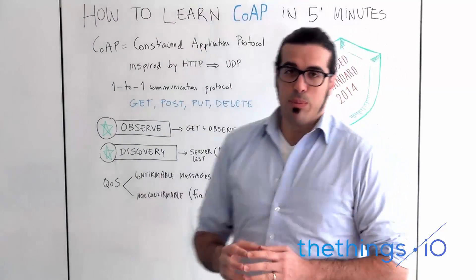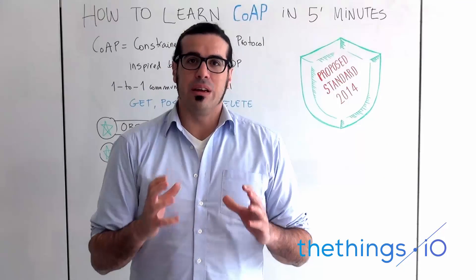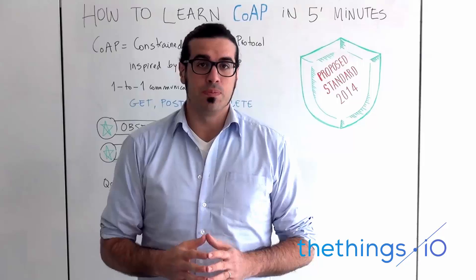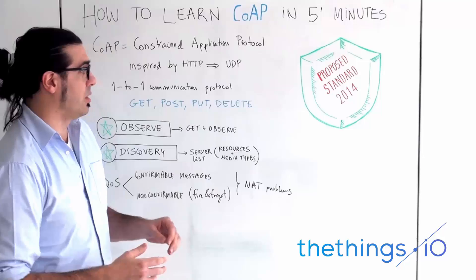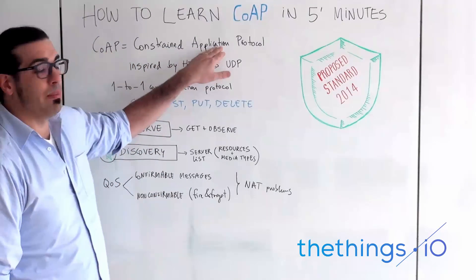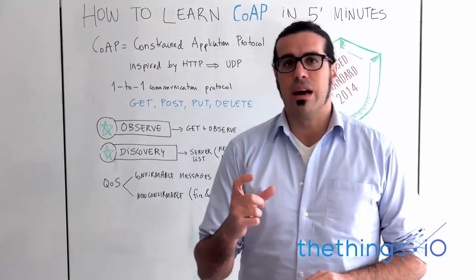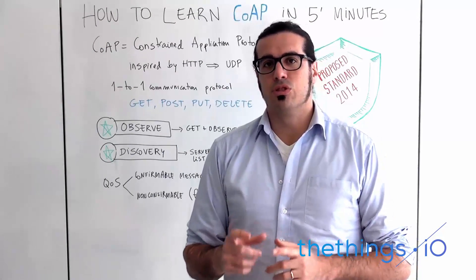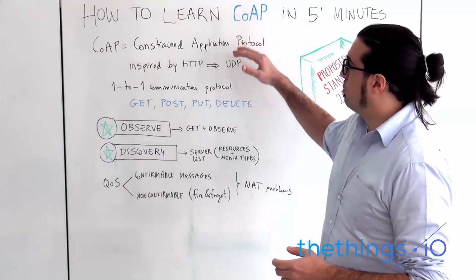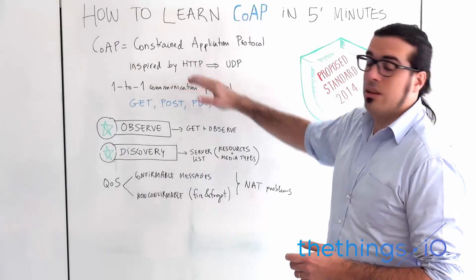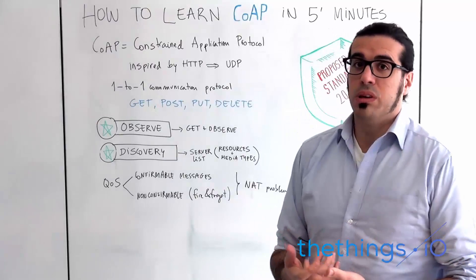CoAP is actually a proposed standard since June 2014, so it's a very new communication protocol that is still not a standard but is going to be one of the future standard protocols in IoT. It means Constrained Application Protocol, which means it was specifically designed for constrained hardware — hardware that doesn't support, for example, HTTP or TCP/IP.